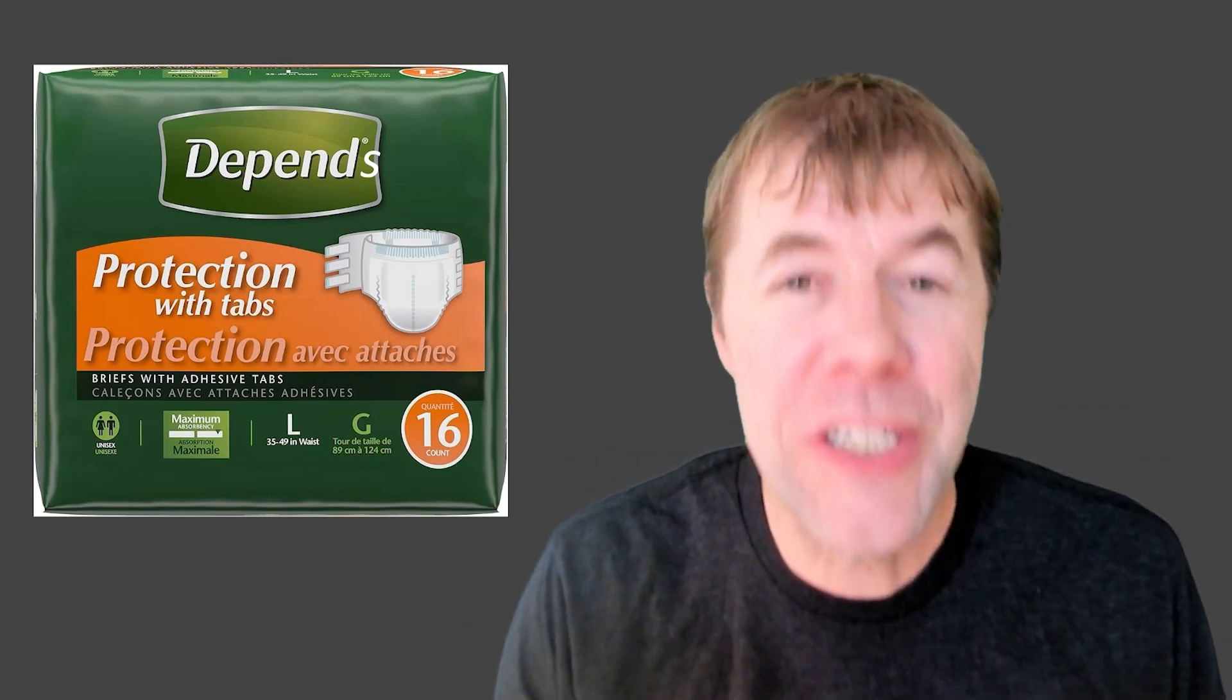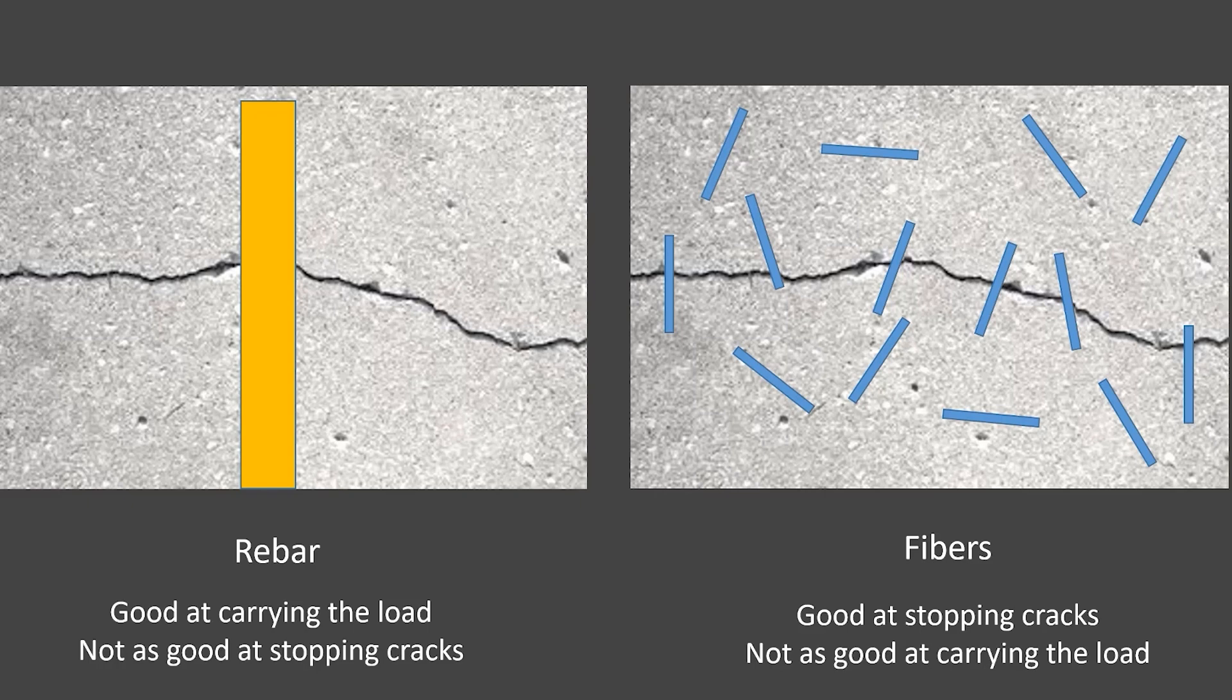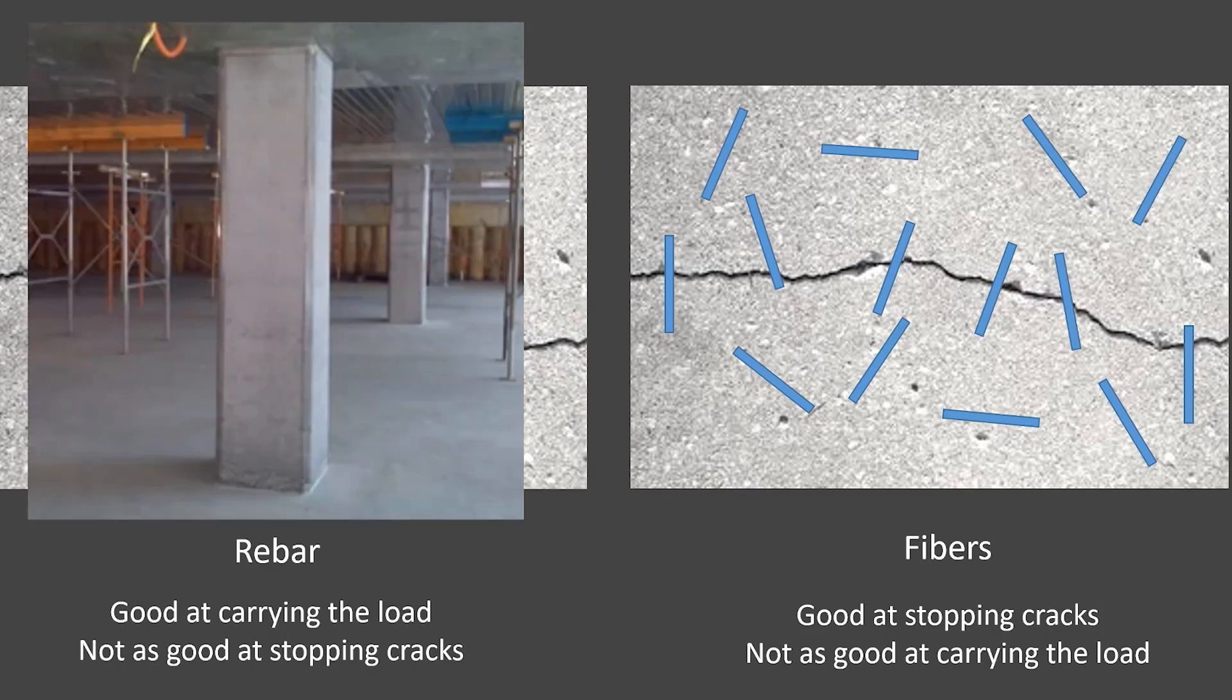That's the great engineering answer: it depends. It's not just fibers. I'm showing the rebar on the left and the fibers on the right. This is the same type of thing I showed you before. Rebar is good at carrying load in one spot but not good at stopping cracks. Fibers are amazing at stopping cracks but not as good at carrying load all in one spot.